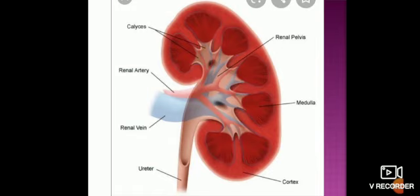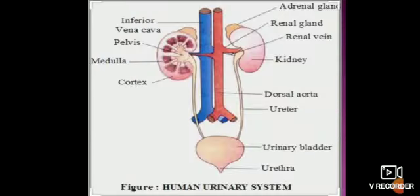The outer region is the cortex, the inner region is the medulla, and the pelvis-like structure collects urine. From the tube known as the ureter, urine drains into the urinary bladder. This complete diagram of the human urinary system with the longitudinal section of the kidney provides a clear and easy understanding of the system.